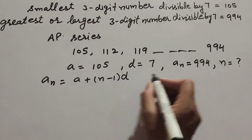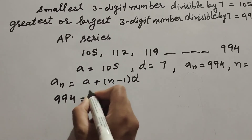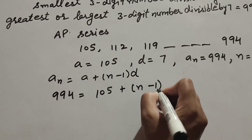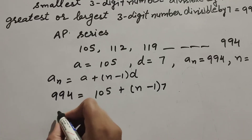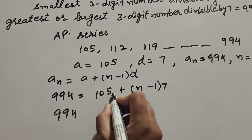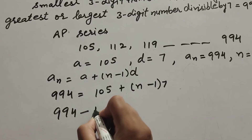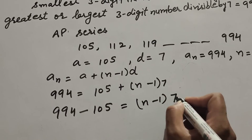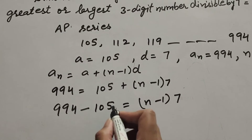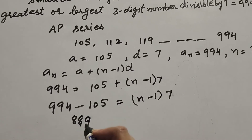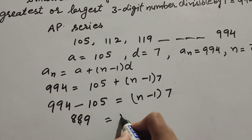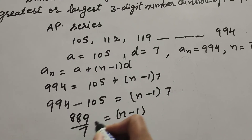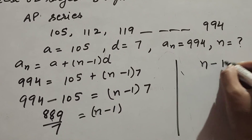The nth term aₙ is the last term 994, a is the first term 105, and d is the common difference 7. So: 994 = 105 + (n − 1) × 7. Transposing 105 to the left-hand side: 994 − 105 = (n − 1) × 7, which gives 889 = (n − 1) × 7.